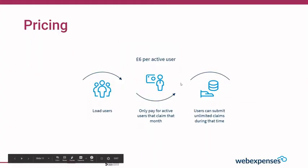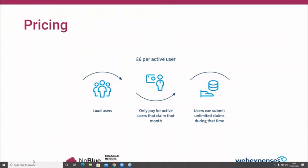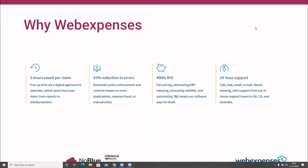Before pricing, it's important to mention the return on investment. We have three key ROI elements: first, three hours saved per claim — employees free up time with a digital approach and can focus on the work they're employed to do. Second, a 43% reduction in errors — automatic controls and policy enforcement eliminate duplications, mileage miscalculations, and out-of-policy claims. Third, a 400% return on investment — our fair pricing, elimination of ERP re-keying, increased visibility, and automation of travel and expense means the software pays for itself.